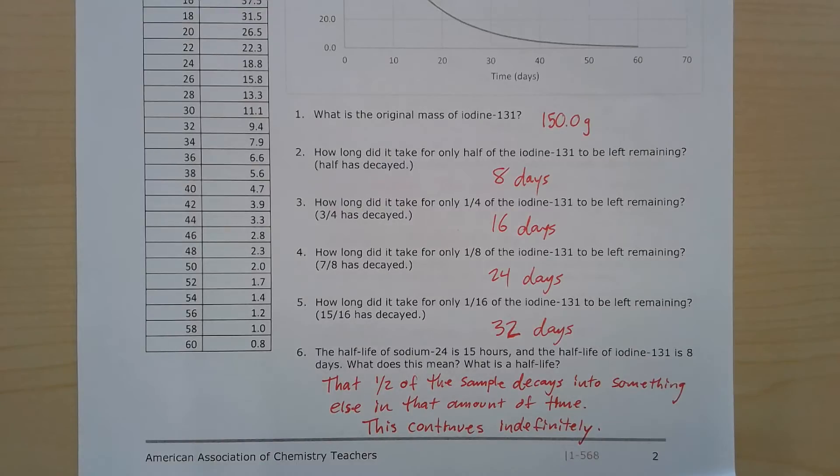And let's go through these answers. Number one, what is the original mass of iodine-131? So the table says 150.0 grams. Number two, how long did it take for only half of the iodine-131 to be left remaining? So again, looking at the table, 150 divided by 2 would be 75 grams, and that correlates with eight days.